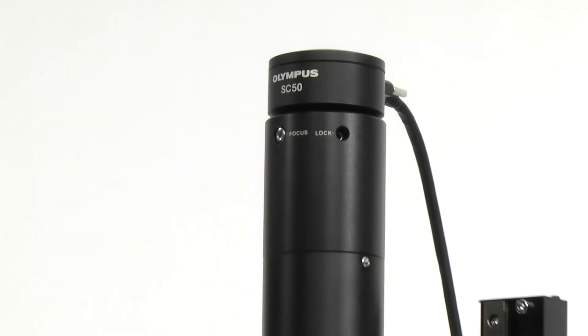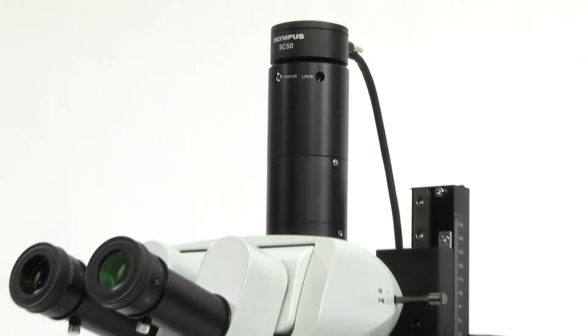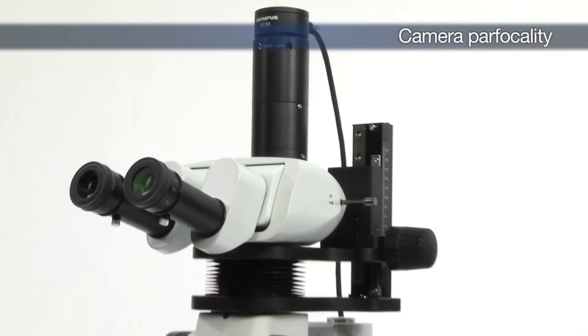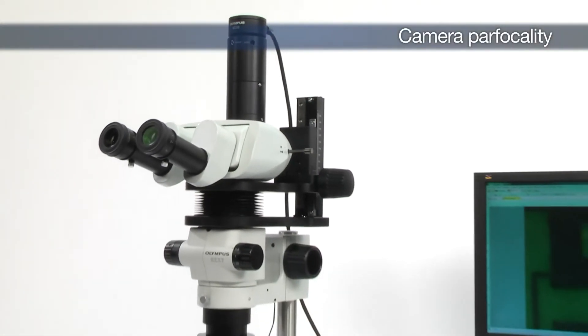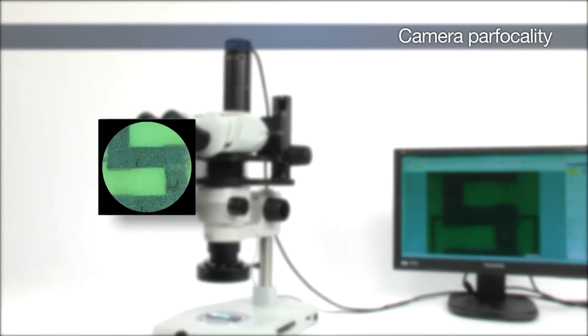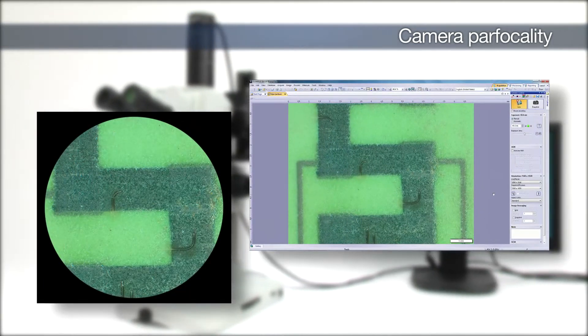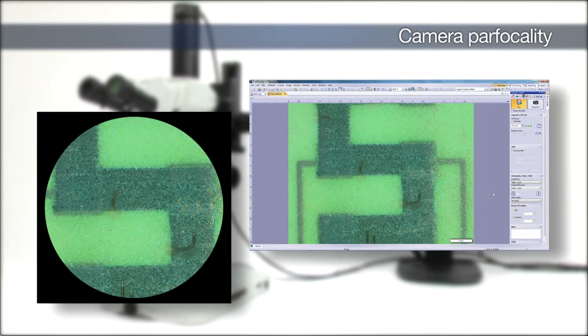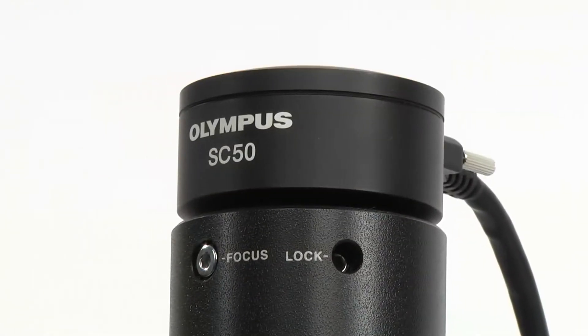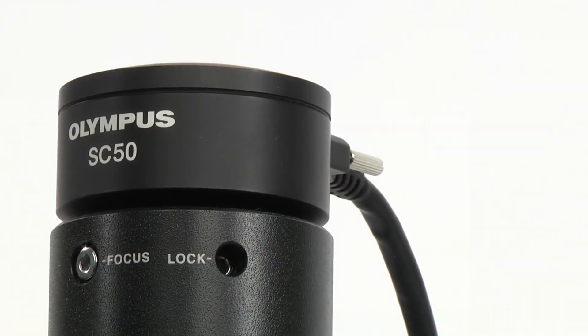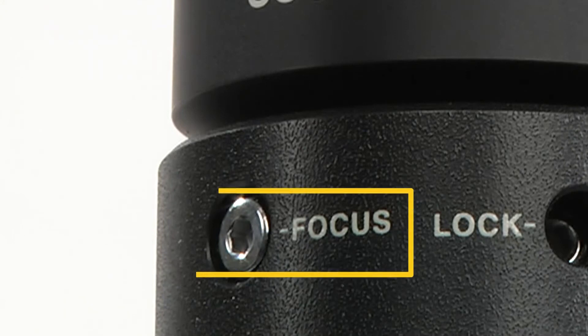For stereo microscopes equipped with digital imaging systems, proper camera parfocality is important to help ensure that the image viewed through the microscope and the image displayed on the monitor are in focus with each other. For this procedure to work, the microscope should be equipped with a camera mount that has a built-in focus adjustment.